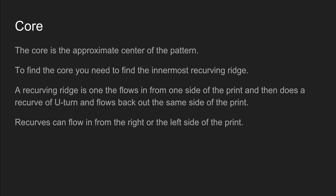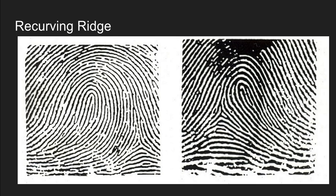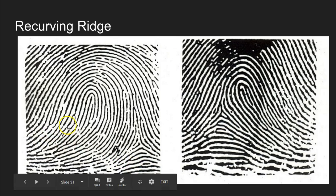We're looking at recurves that are good, not spoiled ones. A recurving ridge is one that flows in from one side of the print, then does a recurve or a u-turn, and flows back out the same side of the print. Recurves can come in from either the right side or the left side of the print. Here we have two different loops — one is a left side loop where the recurves come in and go out the left, and here we have recurving ridges that come in from the right side, a right side loop.